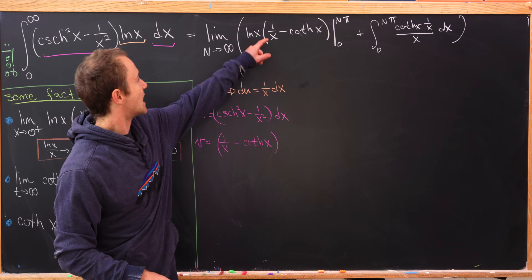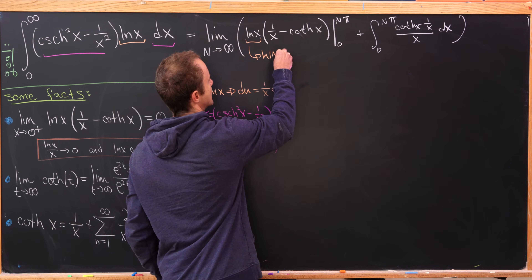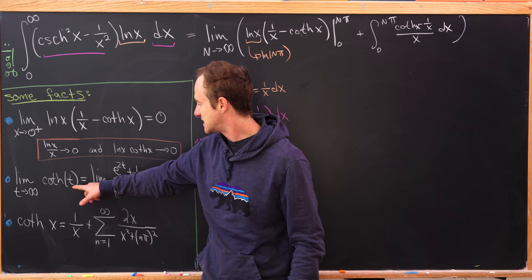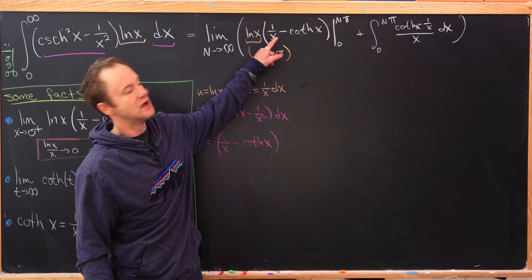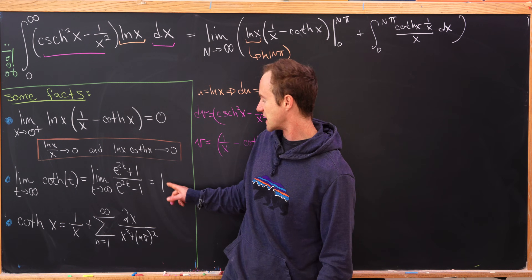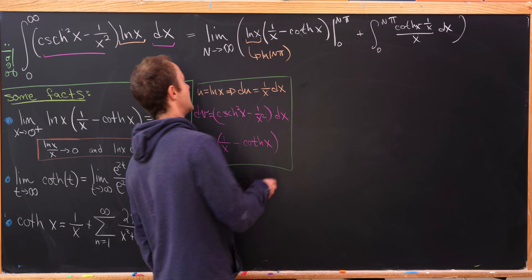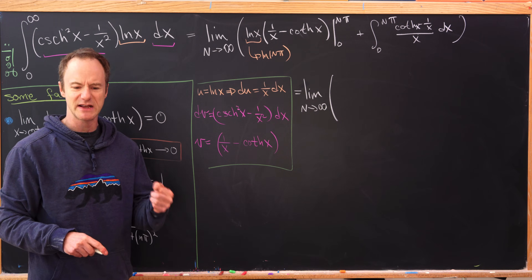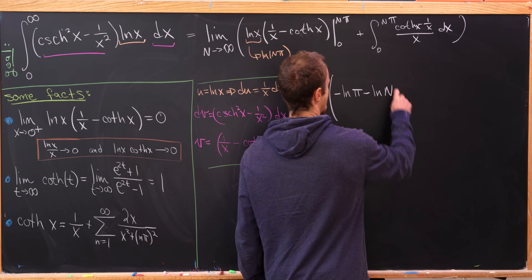At the upper bound, evaluating natural log of x gives natural log of N times pi. The 1 over x term gives 1 over N pi, which goes to 0 as N goes to infinity. The hyperbolic cotangent term gives 1 in the limit, but with a minus sign, netting minus 1. So together the boundary evaluation contributes minus natural log of N times pi, which by logarithm rules equals minus natural log of pi minus natural log of N.